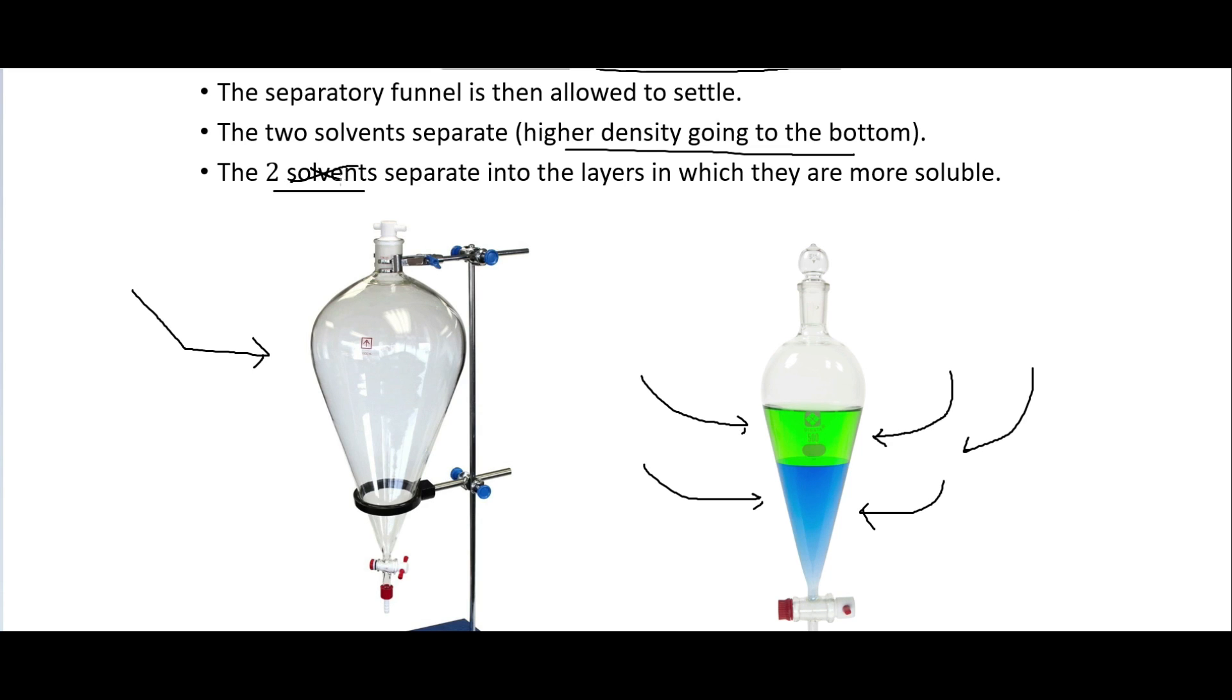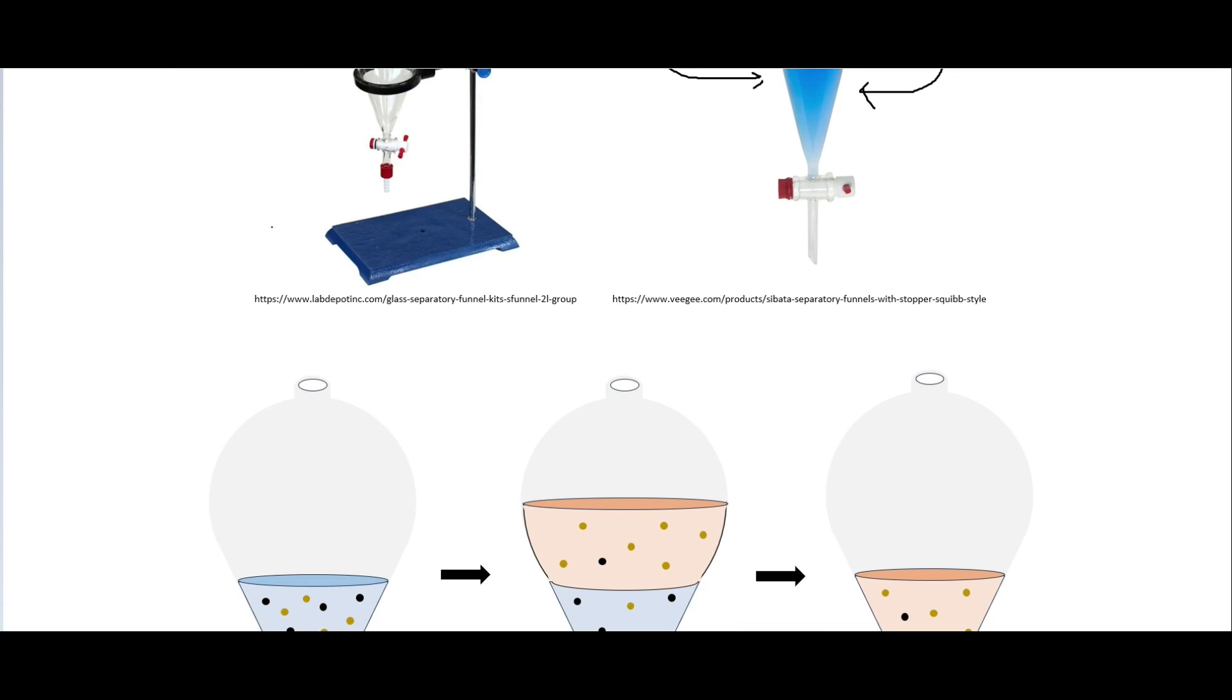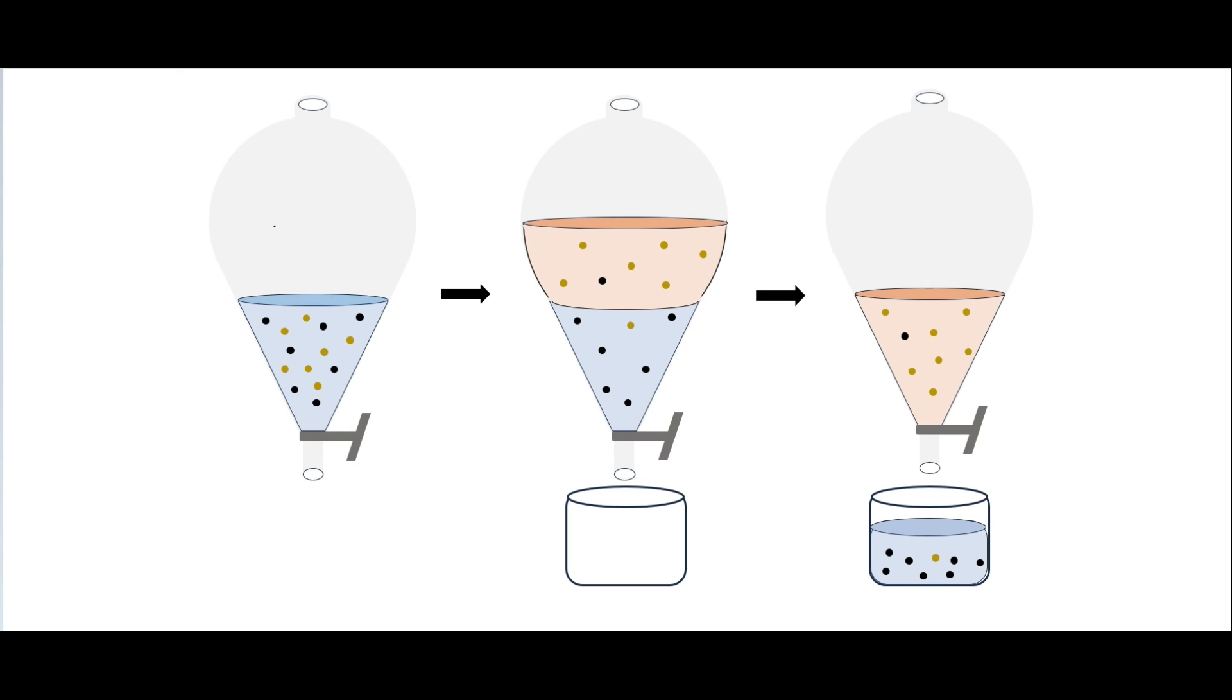So these are my images that I made here. So we have say this is water in here and it has two different solutes. One are the black dots. The other are those more brownish dots. So we put that in there and then we add in the organic layer and shake it and then allow it to settle. And so say these brownish dots are the less polar ones, so the more hydrophobic solutes. And then these black ones are the more hydrophilic solutes. And so those will mostly go into the water and the hydrophobic ones will mostly go into the organic layer.